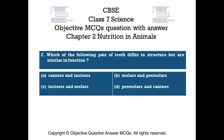Question number 2. Which of the following pair of teeth differ in structure but are similar in function? Option A: Canines and incisors. Option B: Molars and premolars. Option C: Incisors and molars. Option D: Premolars and canines.